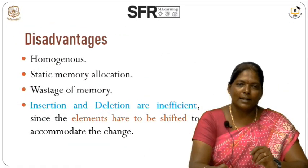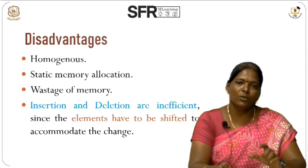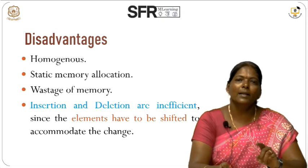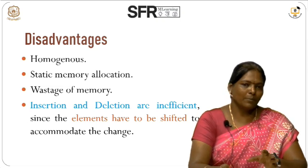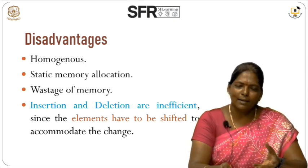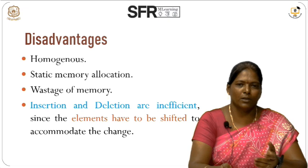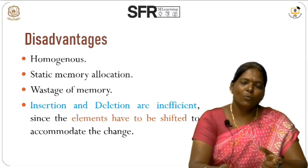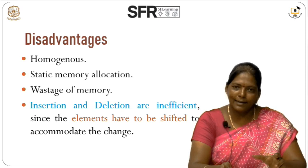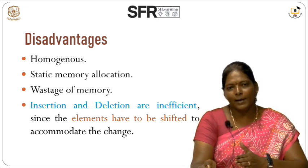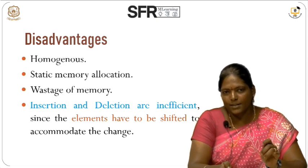Arrays also have disadvantages. First, it is homogeneous — we can store only one data type. If you have an integer array, you can only store integer values. Second, it is static — we must specify the array size at the beginning of the program. If you declare an array of size 100 but only use 5 elements, there is a lot of wastage of memory. Third, insertions and deletions are very inefficient — when deleting or inserting an element, we have to shift all the remaining elements, which involves a lot of changes.